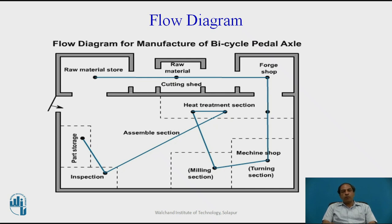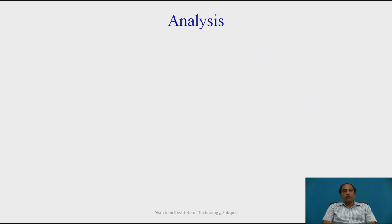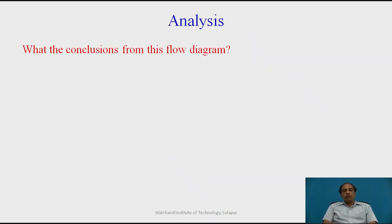After that, it can be dispatched to the required destination through the dispatch section. So this is the flow diagram — if you observe it, you will find a typical straight-line flow, and in the heat treatment process, there is some backtracking. After studying this process, we should be able to analyze it on the following lines: what is the conclusion of this flow diagram, what do you comment about the process, its flow, its backtracking, and whether any bottleneck is happening.